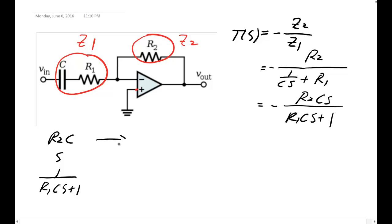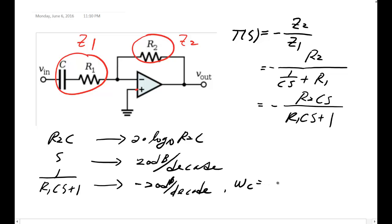So for your constant, you have 20 log 10 R2C. This is a straight line with positive 20 dB per decade in slope. This one is negative 20 dB per decade. And also omega_c equals 1 over tau. Tau would be R1C.